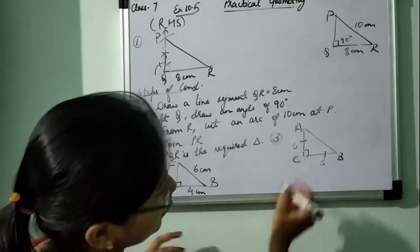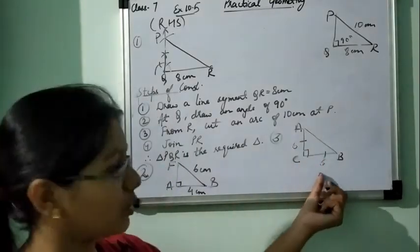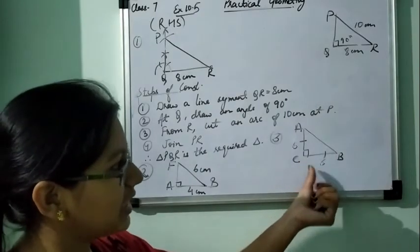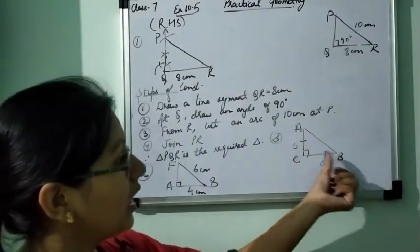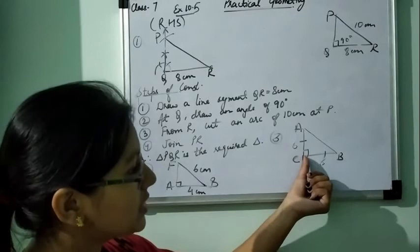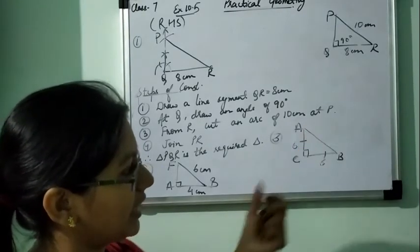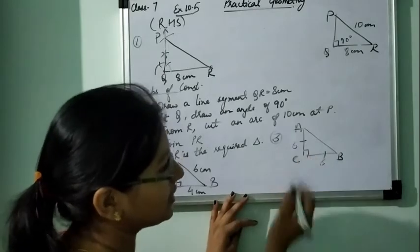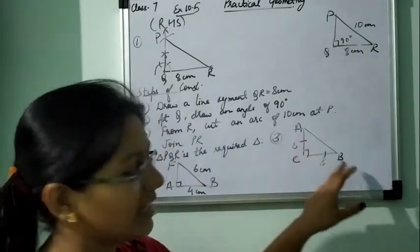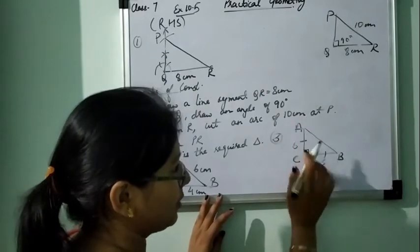So construction is simple. First of all, draw a line segment BC is equal to 6 cm. At C, draw an angle of 90 degree. And then from C, cut an arc of 6 cm at A.